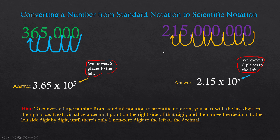For this number I'm going to have 3.65 times 10 to the fifth power. And for this number I'm going to have 2.15 times 10 to the eighth power.